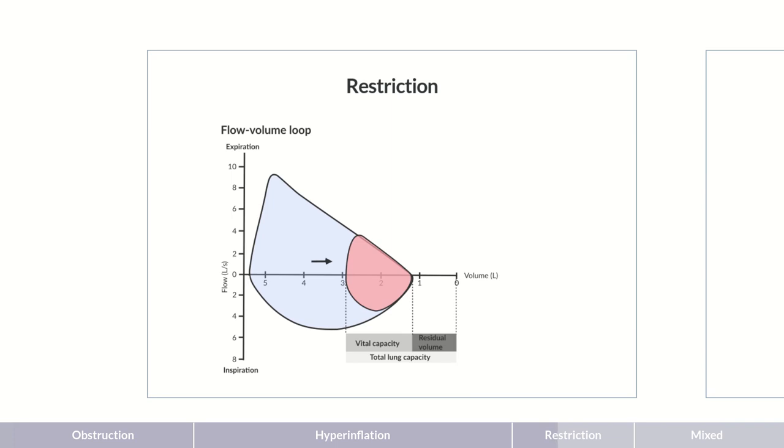Restriction of the lungs can be due to intrinsic or extrinsic causes. The flow-volume loop even provides clues on the location of the cause. The curve depicted here is characteristic of extrinsic causes. With these, the vital capacity is decreased, but further progression of the curve resembles the physiological finding. Extrinsic causes can be a volume reduction due to external compression, such as in pneumothorax, but also respiratory muscle weakness and neurological diseases. These causes lead to decreased lung expansion.